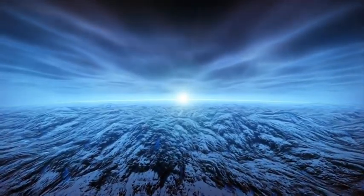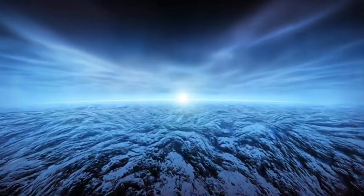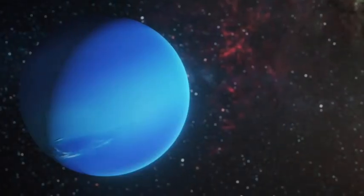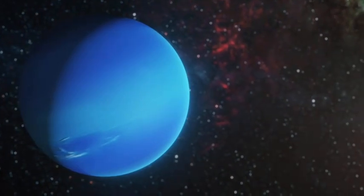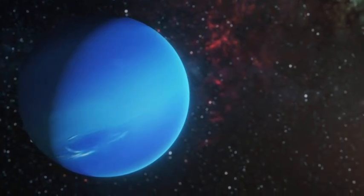Most of Neptune is made up of water, ammonia and methane. The planet doesn't have a solid surface, but it has a solid core like Earth.